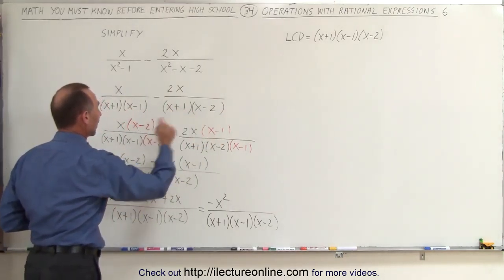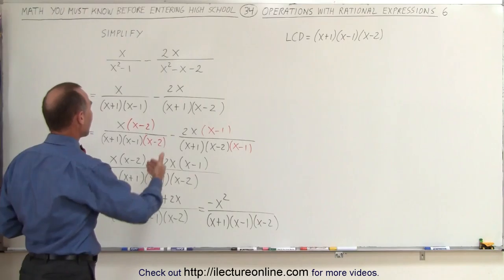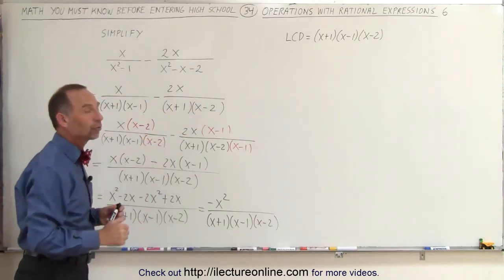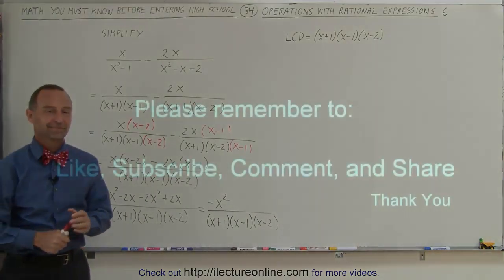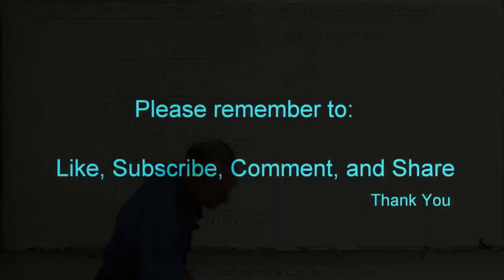Again, notice, if the denominators are not the same, and you have to add or subtract these expressions, then you have to make the denominator common. You do that by multiplying each fraction or each expression by the missing part of the lowest common denominator. And that's how it's done. Thank you.